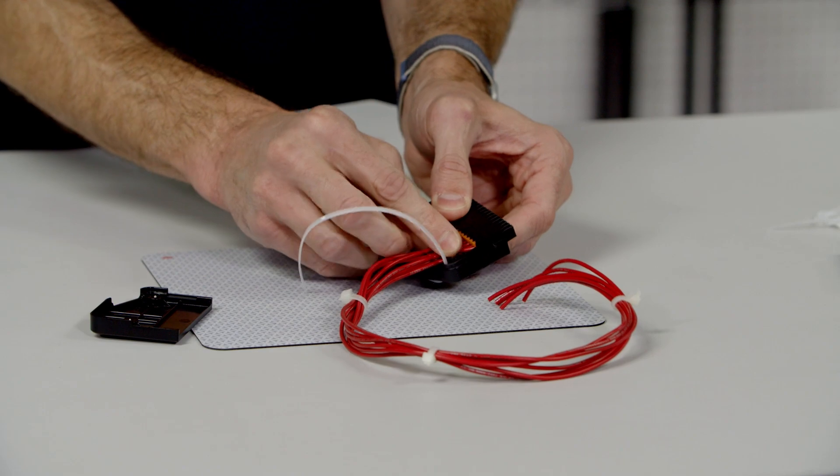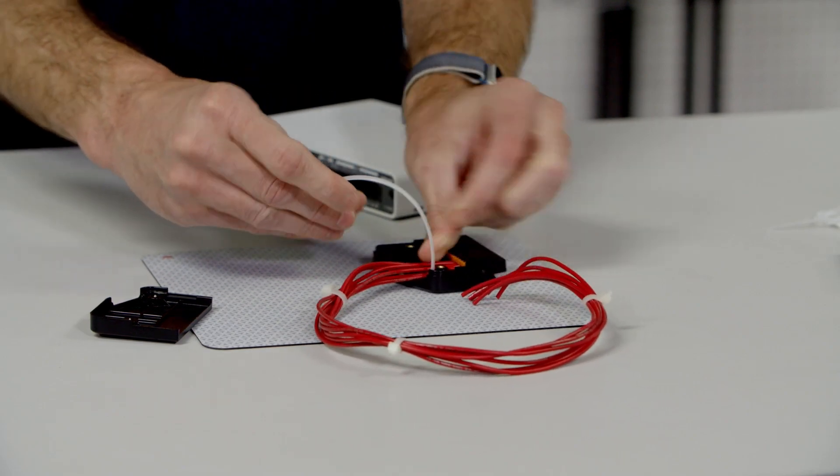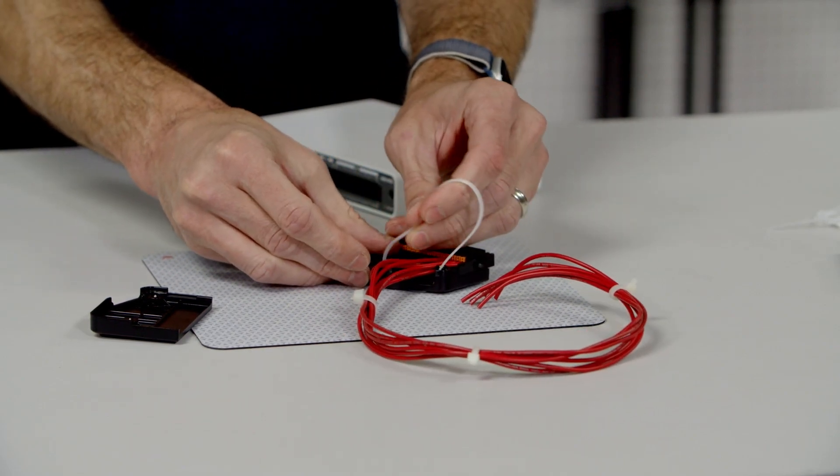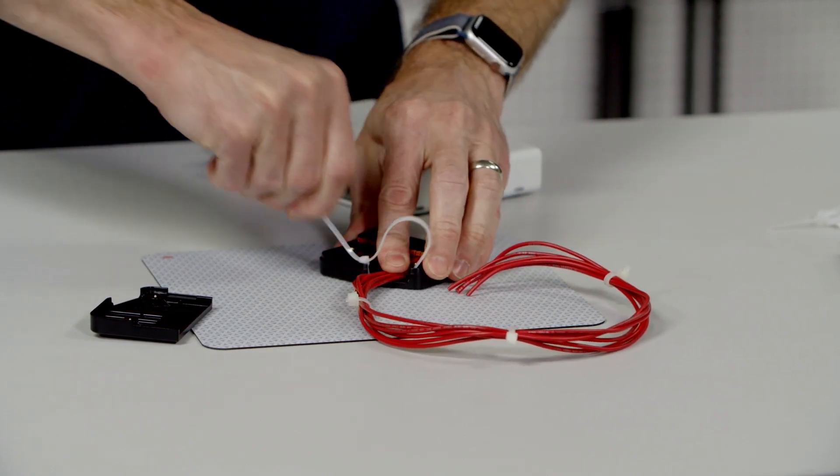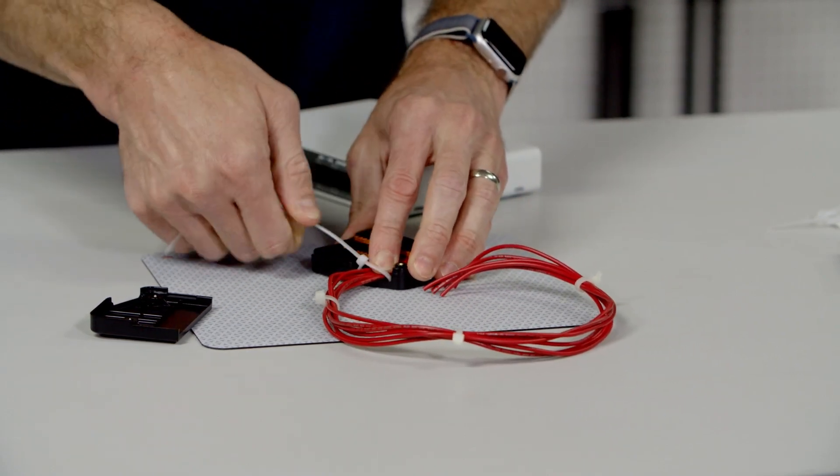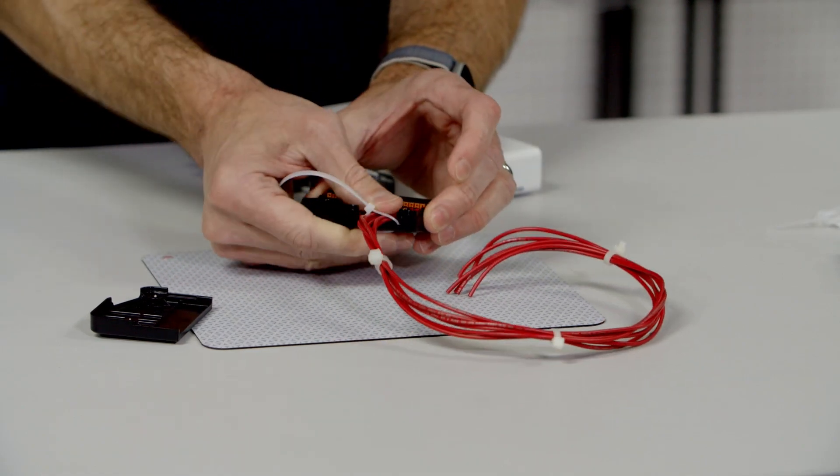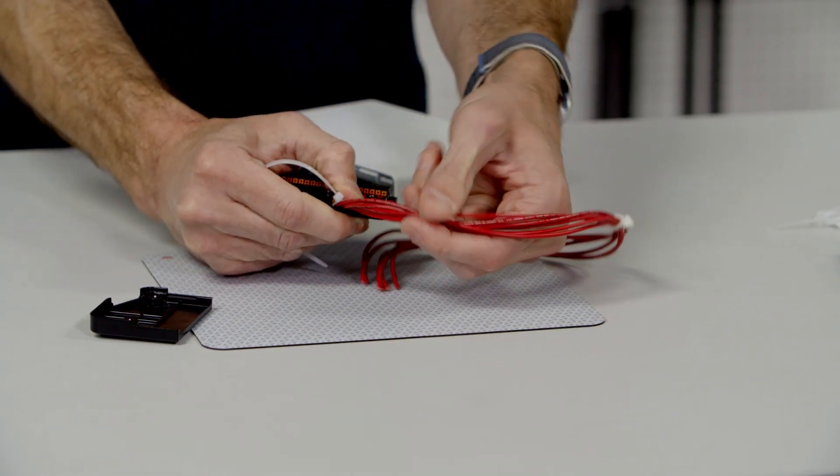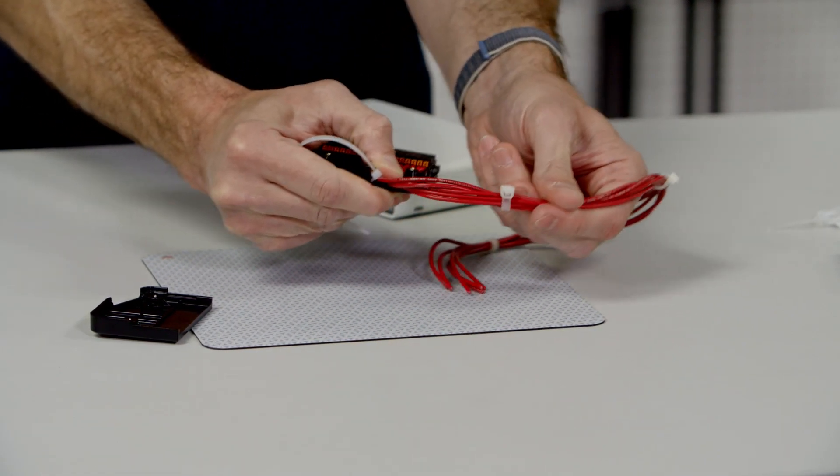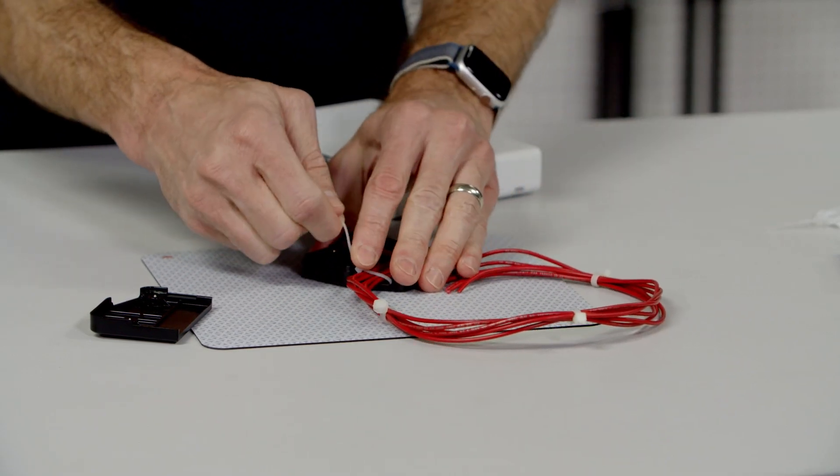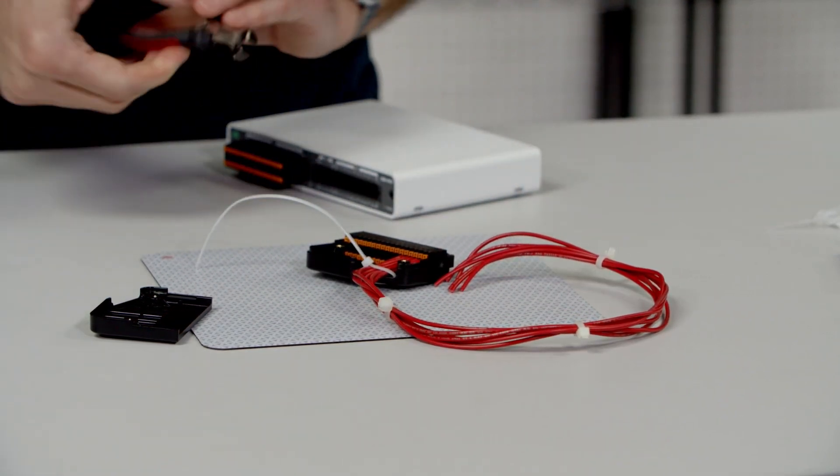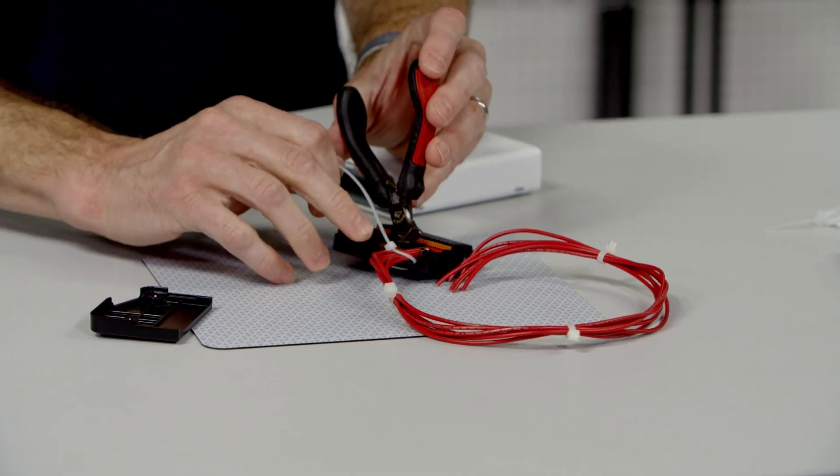Route the wires around that thread and then we'll feed the zip tie. And what the zip tie is going to do is it's going to take a lot of the stress if someone pulls on the cable. So it's going to pull on the zip tie instead of pulling on the connections of the signal wire. So we'll get that snug. Snip it off.